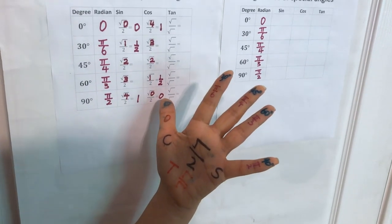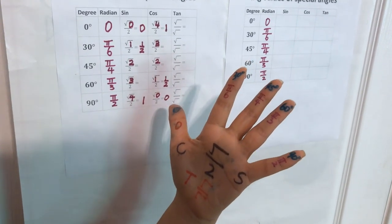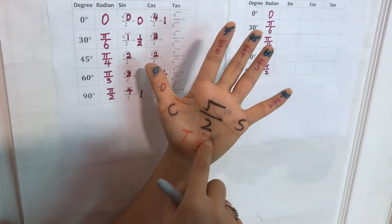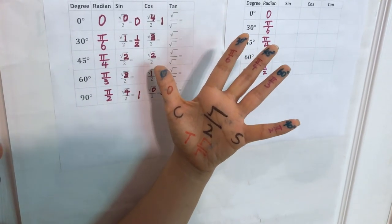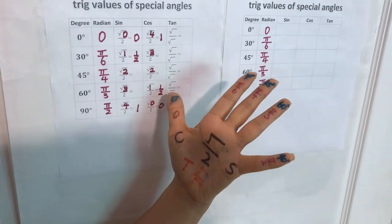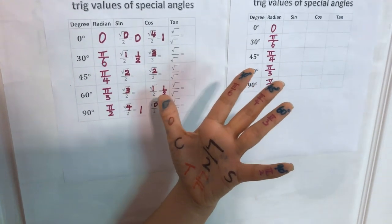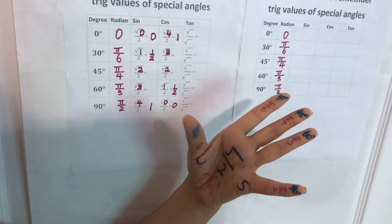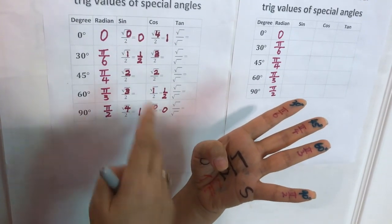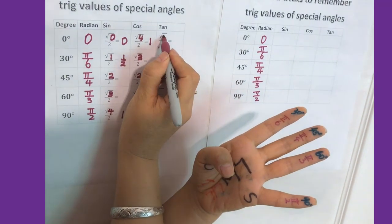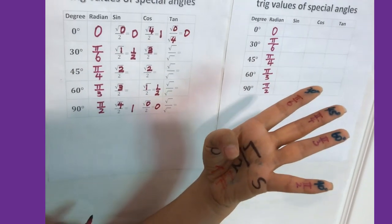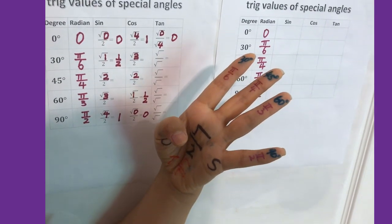Now let's go to tangent. For the tangent part, we use square root over square root with a division line, because tangent equals sine over cosine. For tangent 0, there are no fingers above — square root of 0 over square root of 4 — that means 0. So tangent 0 equals 0.